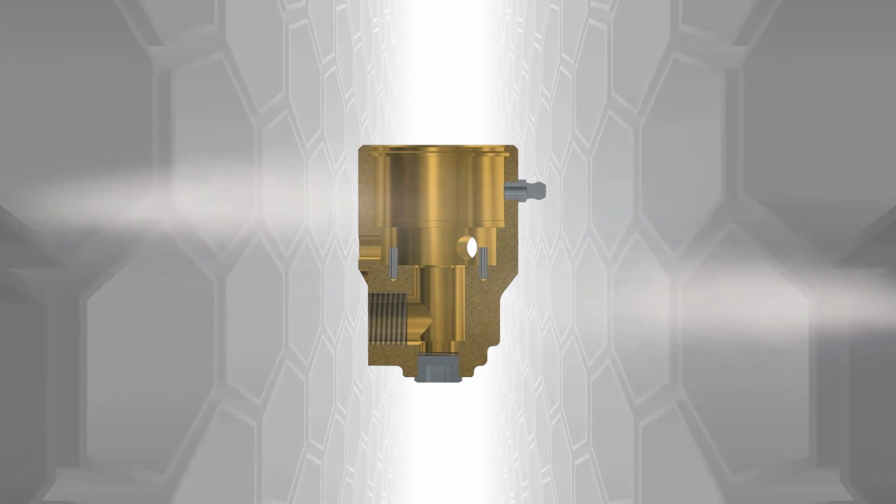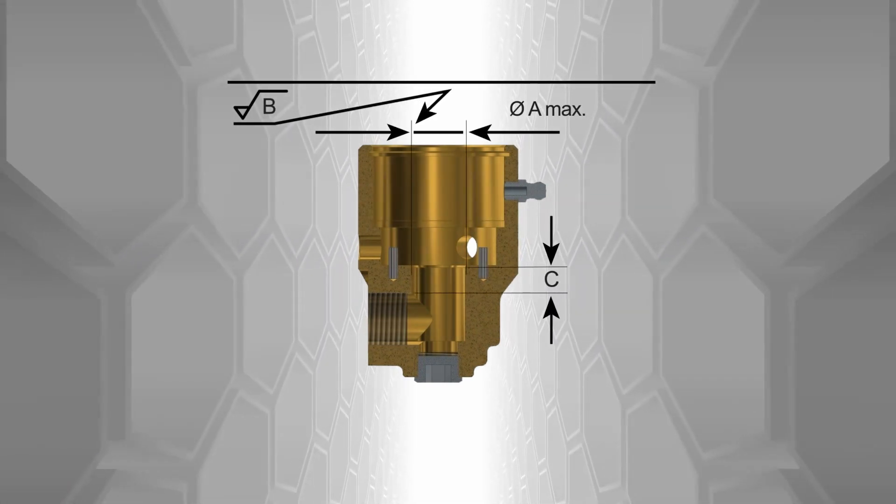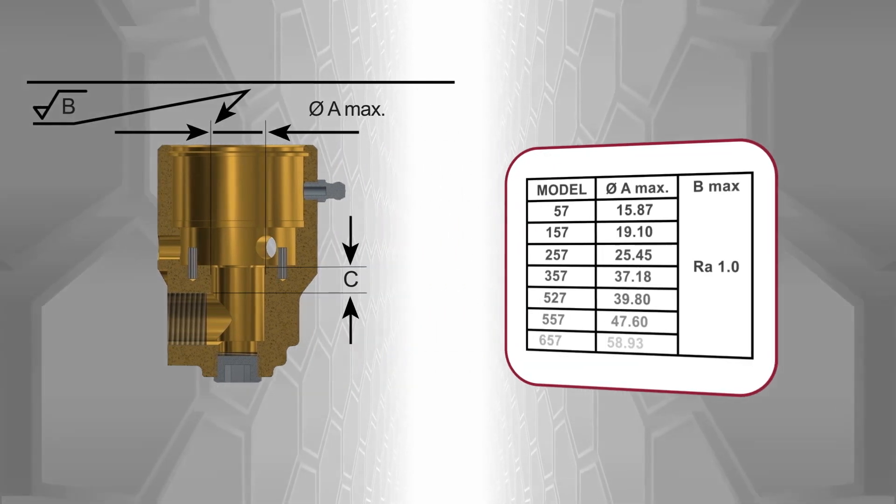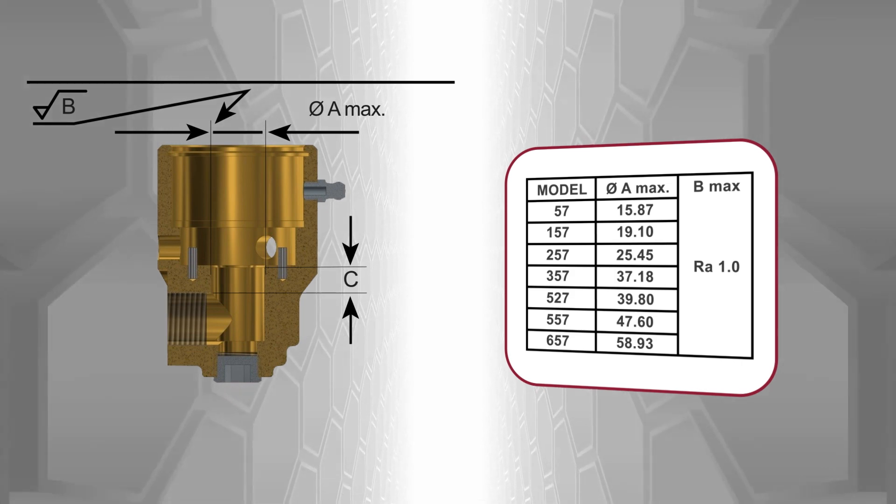Clean the union housing thoroughly, then measure the bore surface for wear or pitting. The measured value should not exceed the maximum value given in the table for your 57 Series model number.